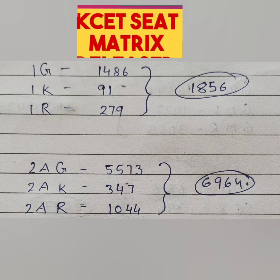To understand, there are different categories starting with category 1. Within each category there are sub-categories called G, K, and R. G stands for general, K for Kannada, and R for rural. These are sub-categories within every main category. You can see the number of seats available for each category. In total, category 1 students have 1856 seats available in KCET 2023.